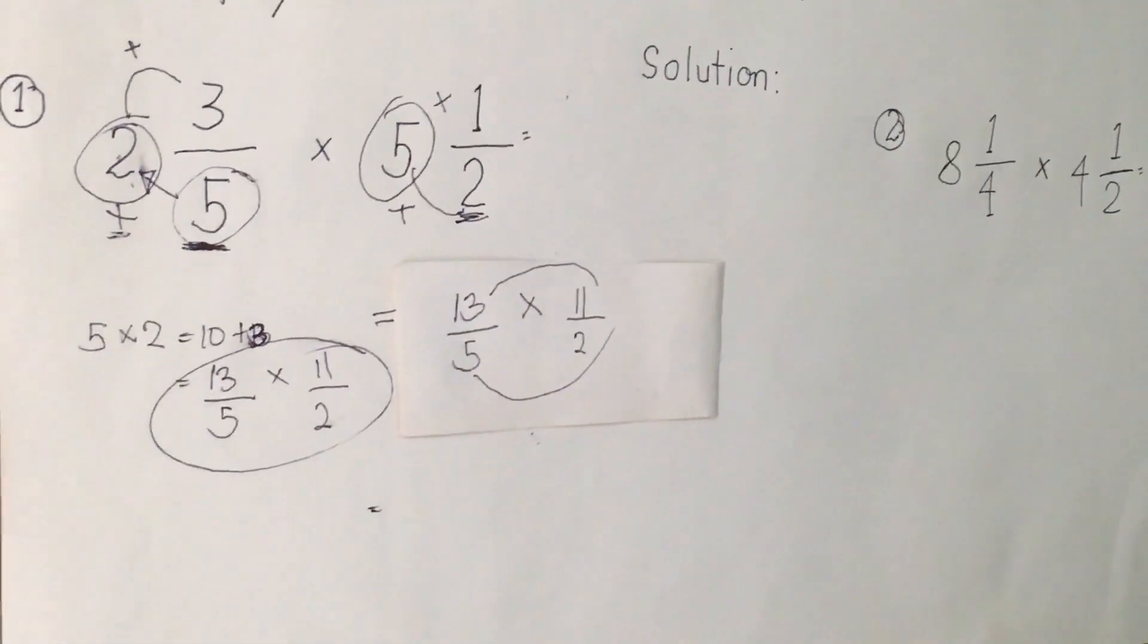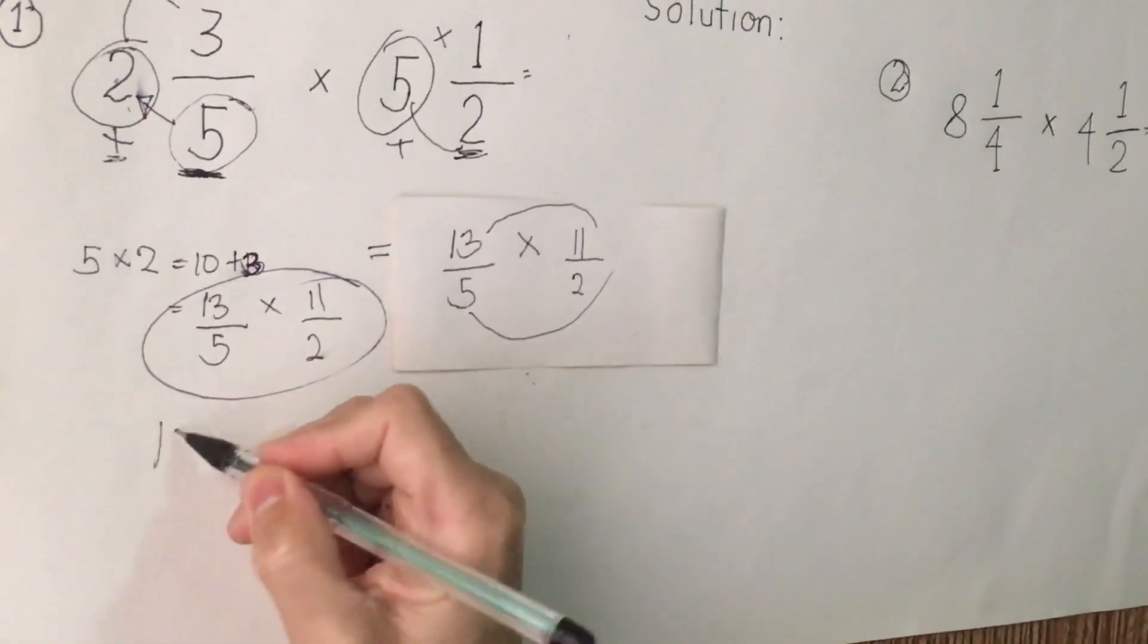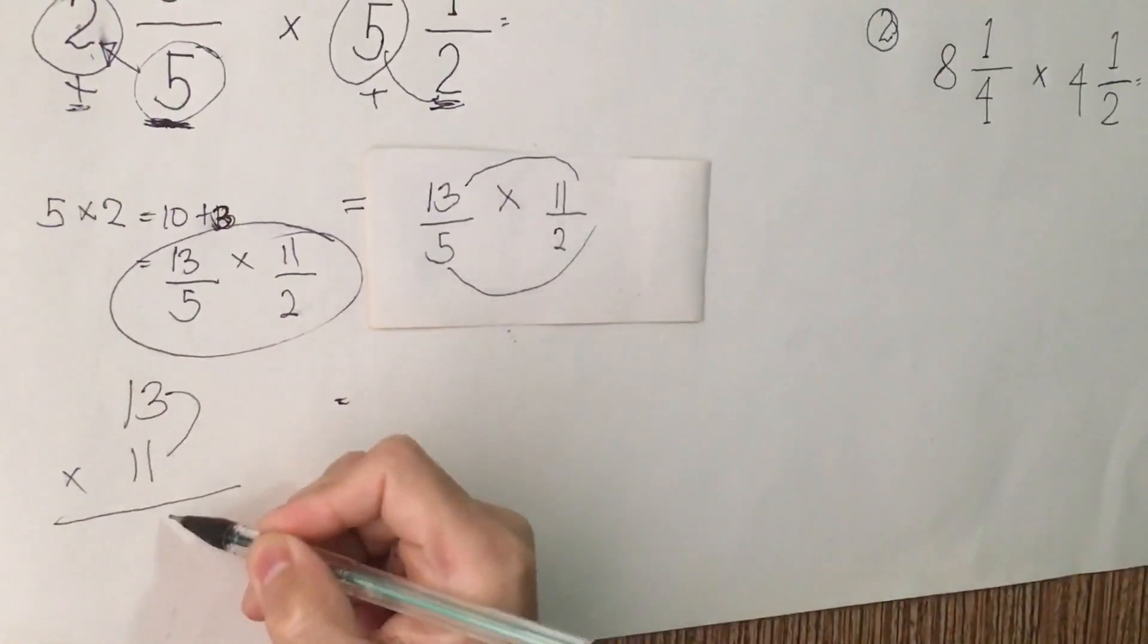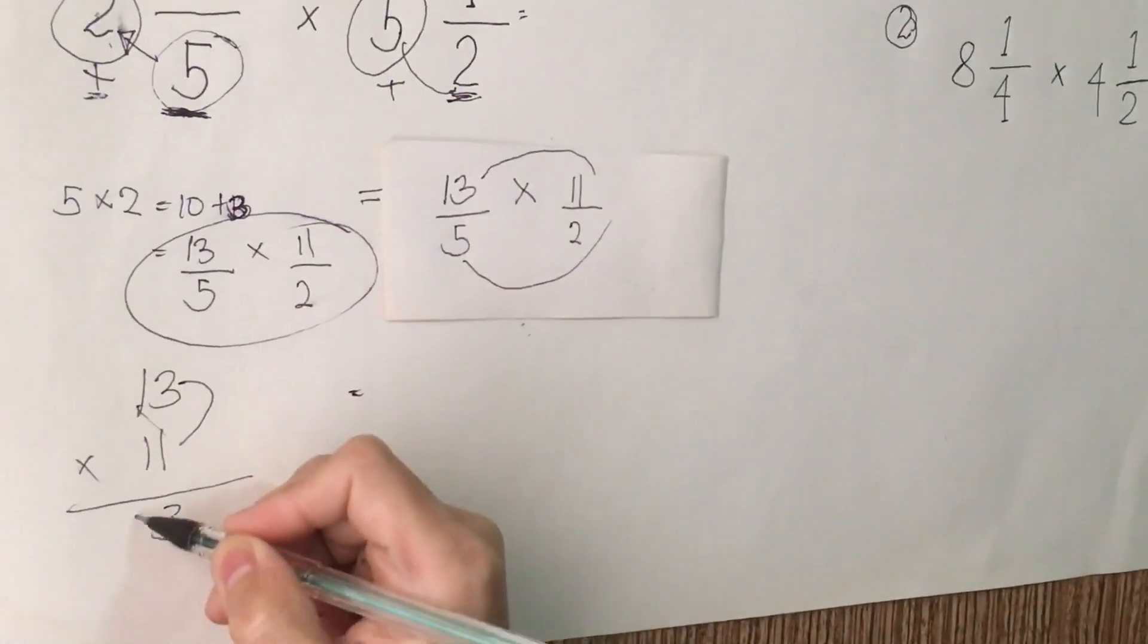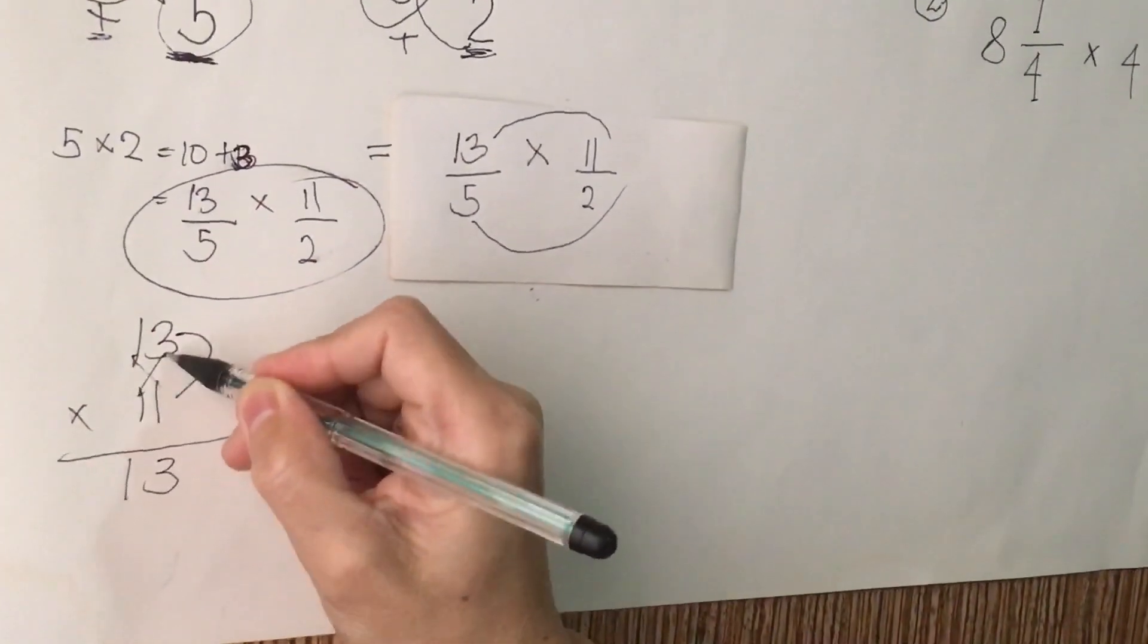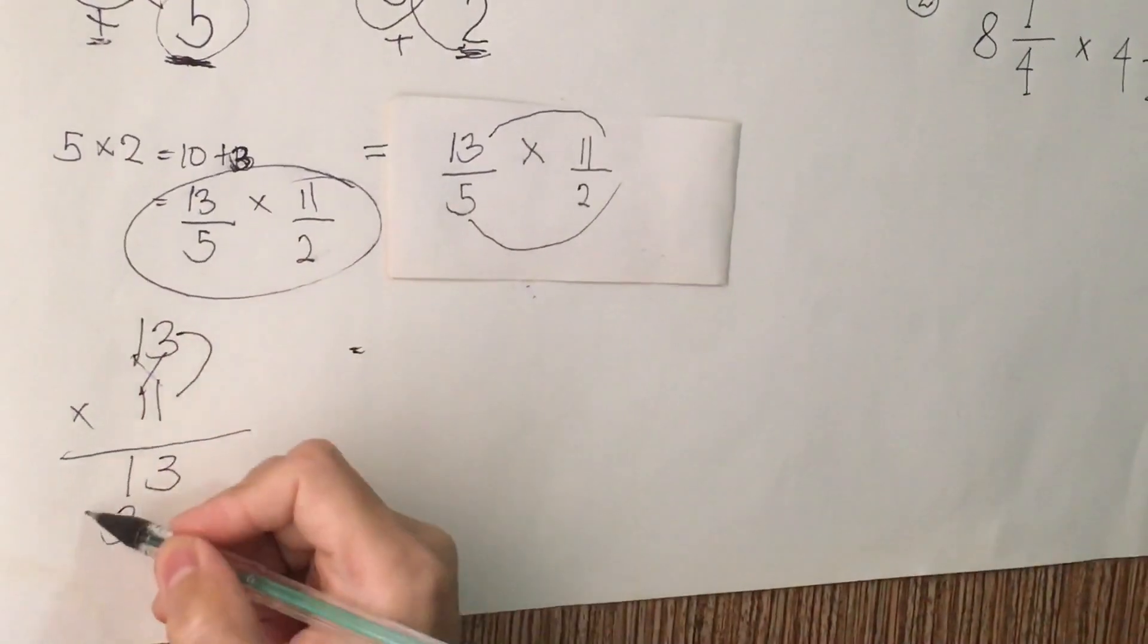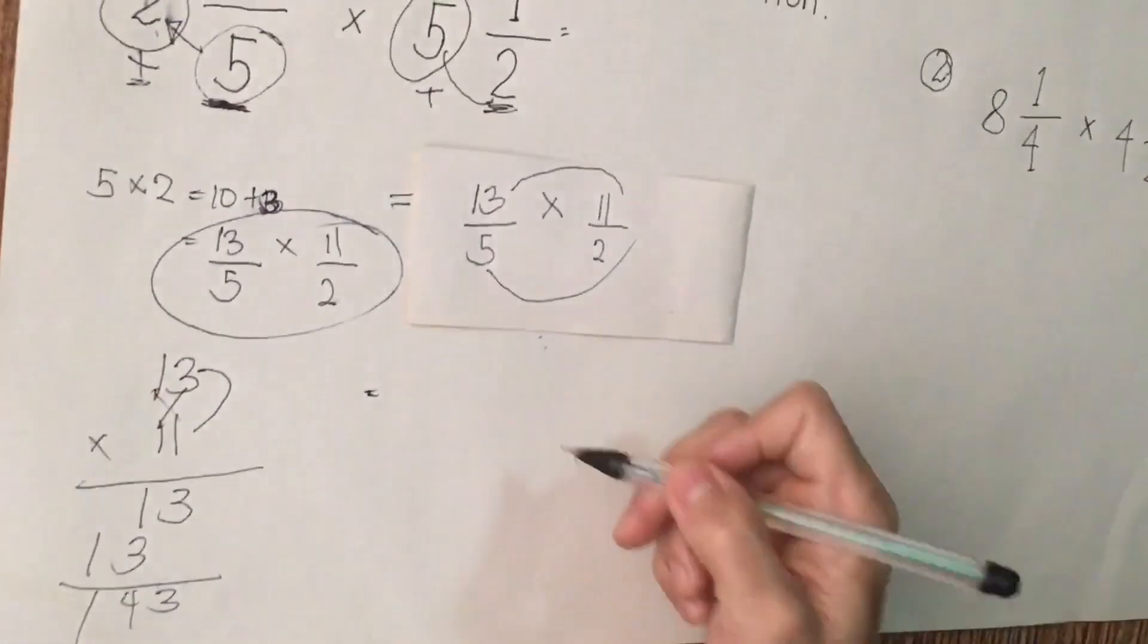I am going to show you how to multiply 13 and 11. 13 times 11, step by step. 3 times 1, I am going to write here 3. 1 times 1, I am going to write 1. 1 times 3, I am going to break down 3 here, then 1. So we have the result.